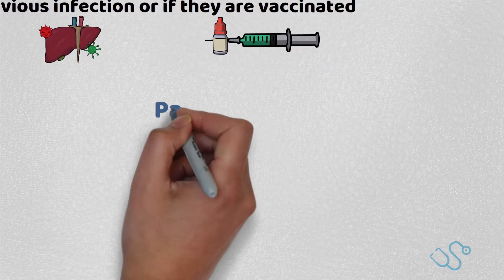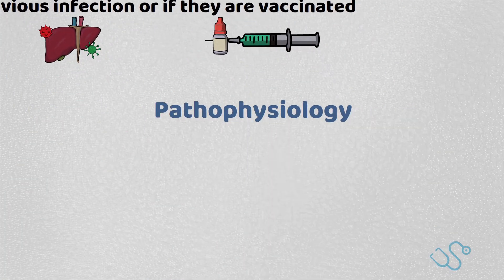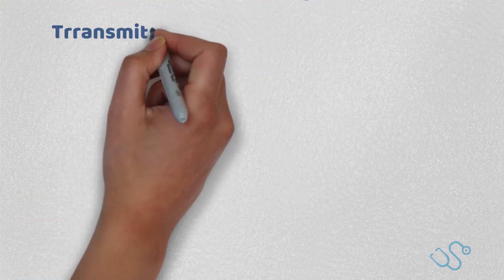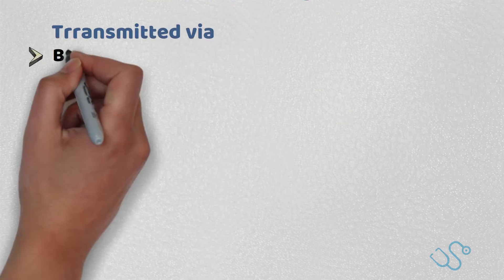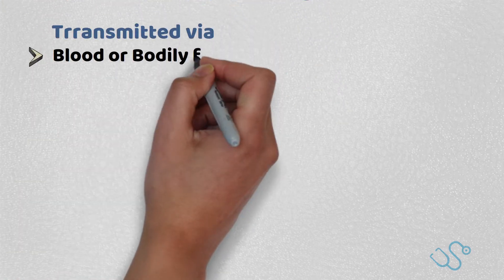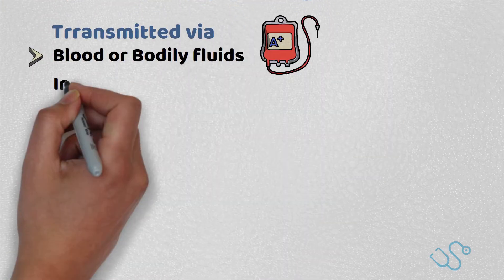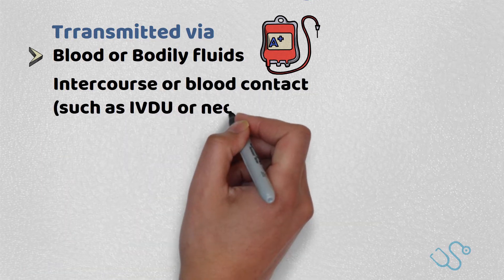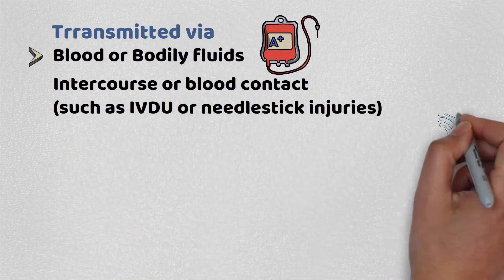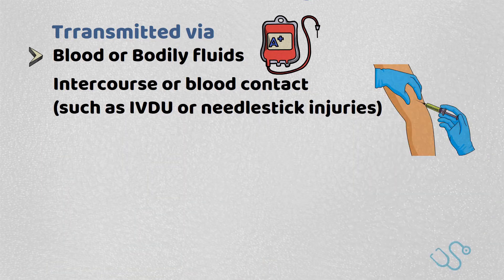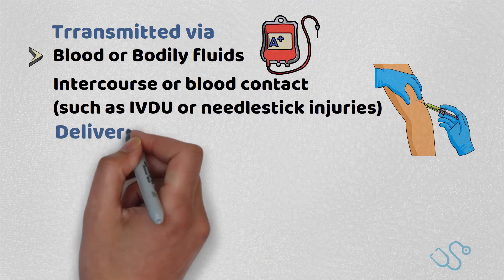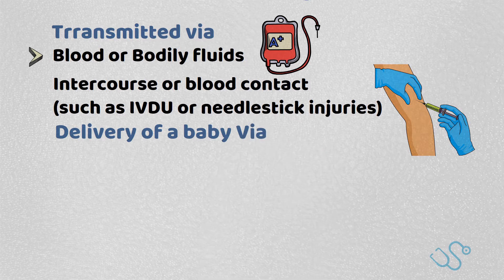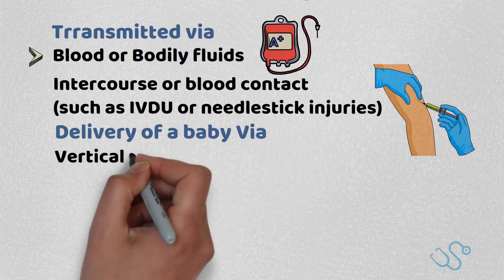Pathophysiology. Hepatitis B is transmitted via blood or bodily fluids, so it's commonly seen via intercourse or blood contact such as IVDU or needle stick injuries, and also via the delivery of a baby through vertical transmission.